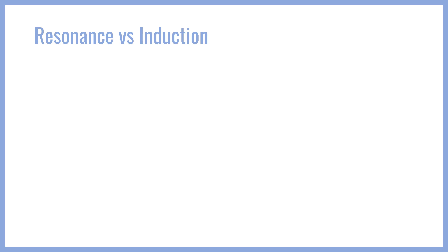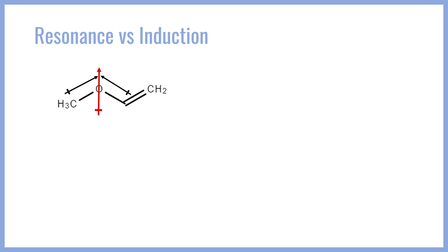Now let's return to our original molecule with no resonance structures and consider what the molecular dipole looks like. From the perspective of electronegativity or induction, we would expect the dipoles to point towards the oxygen. Oxygen is significantly more electronegative than carbon, and electronegative atoms withdraw electron density towards themselves through the sigma bonds — an inductive method — leading to dipoles pointing towards the negative atom. Due to vector summation of bond dipoles, the overall molecular dipole would point straight up through the oxygen.